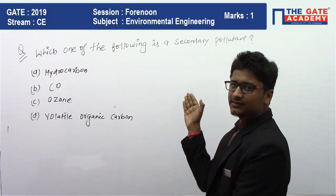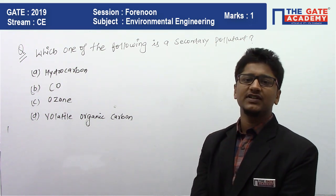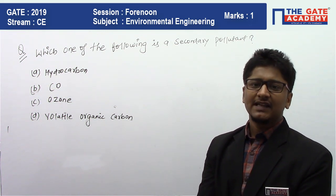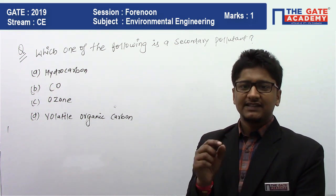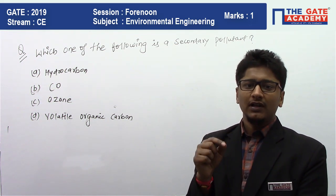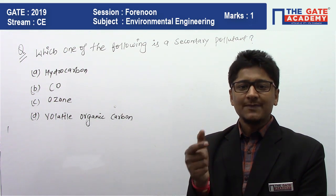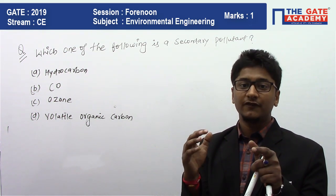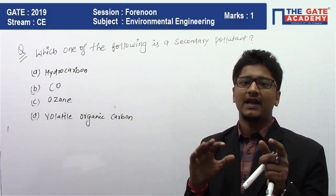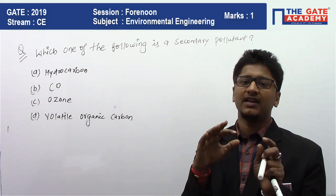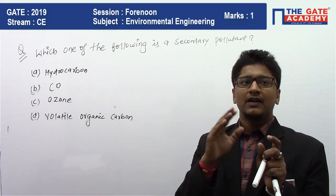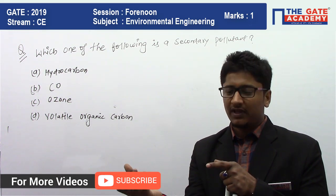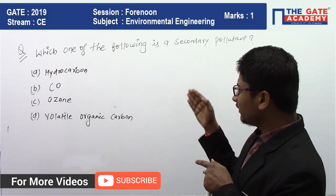The topic of discussion is air pollution. A secondary pollutant means this pollutant is not directly present in the atmosphere — it forms through some chemical reaction, where two compounds mix and a new compound is formed.